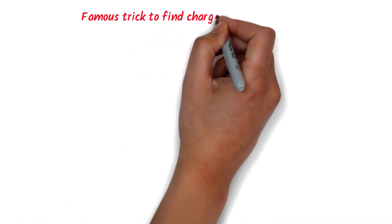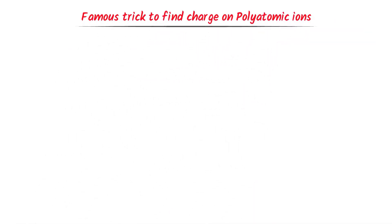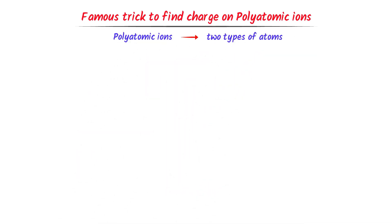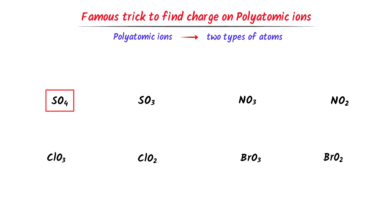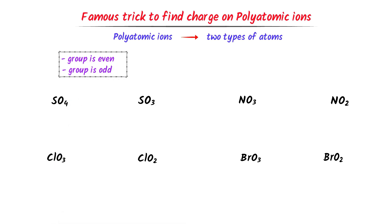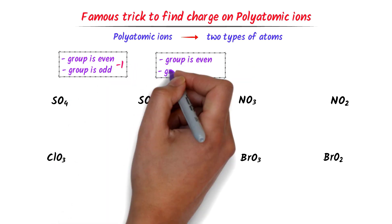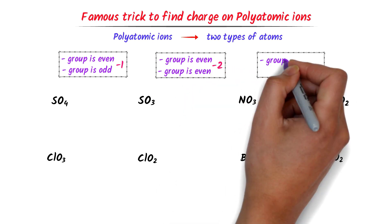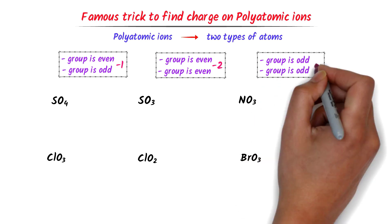Now let me teach you the famous trick to find charge on polyatomic ions. In this trick, the polyatomic ions should contain only two types of atoms. The rule is: if the group numbers are even and odd, the charge will be negative 1. If both group numbers are even, the charge will be negative 2. And if both group numbers are odd, the charge will be positive 1.